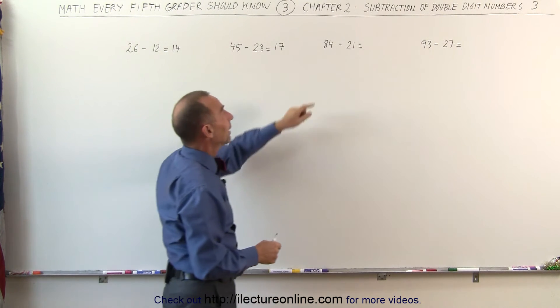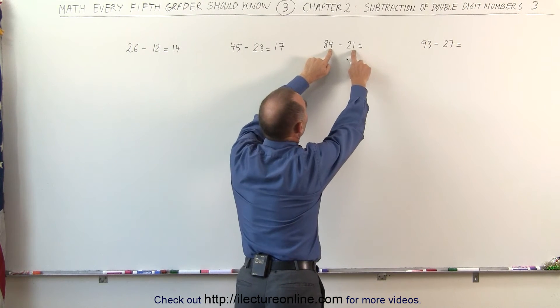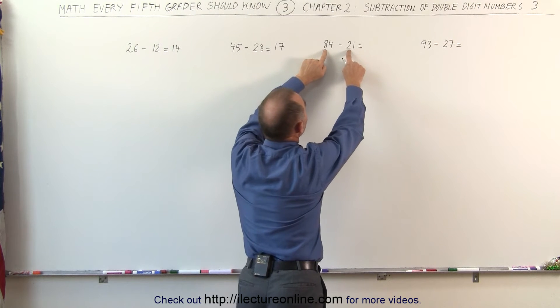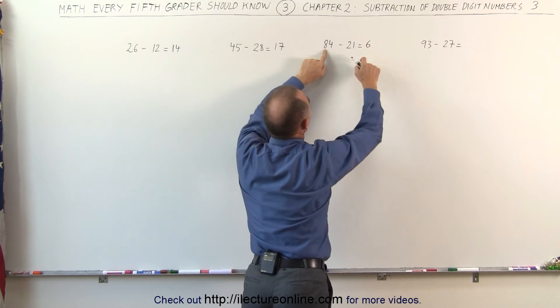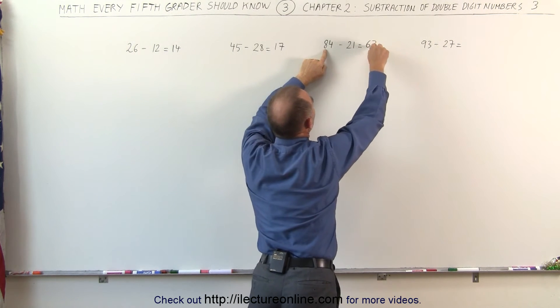84 minus 21, I realize that the 1 is smaller than the 4. So I simply subtract the 2 from the 8, that gives me a 6. And I subtract the 1 from the 4, that gives me a 3.